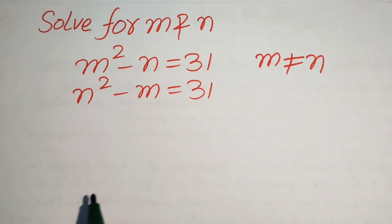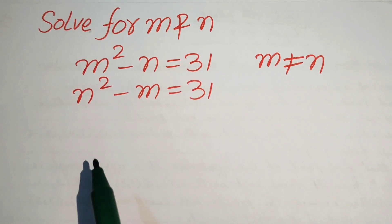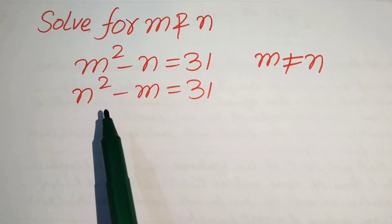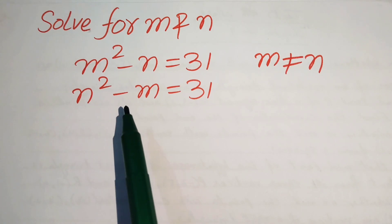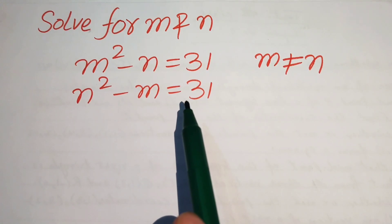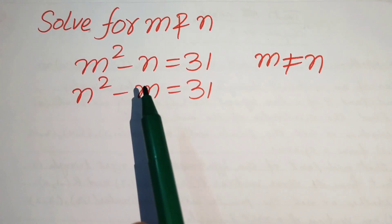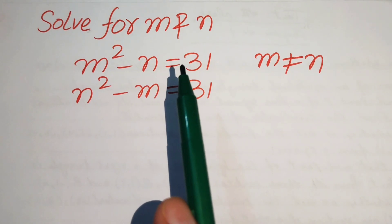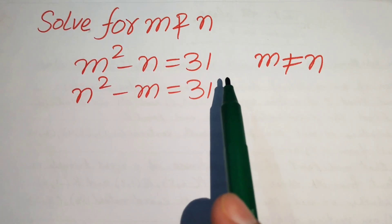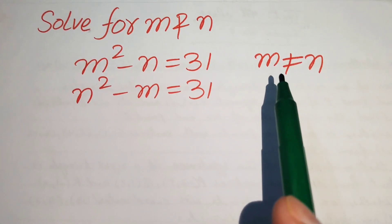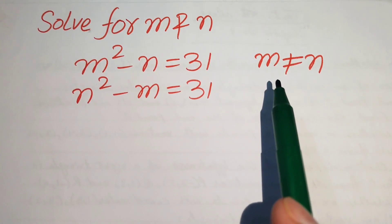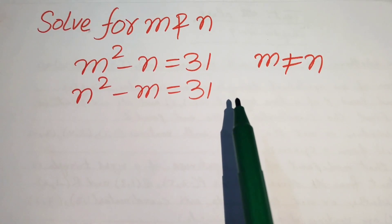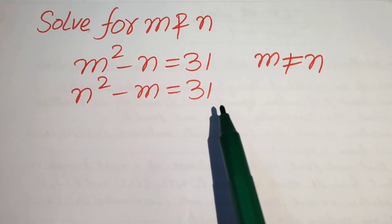Hello everyone, welcome. Here we have m squared minus n equals 31 and n squared minus m equals 31. We solve this problem for the values of m and n. One condition is that m is not equal to n, meaning we solve for distinct values of m and n.